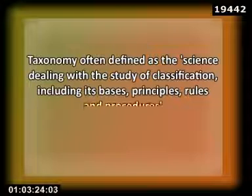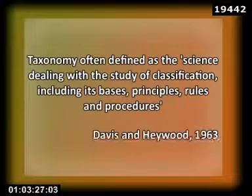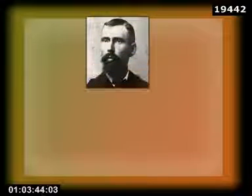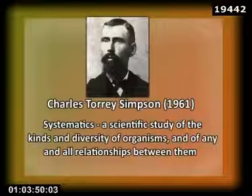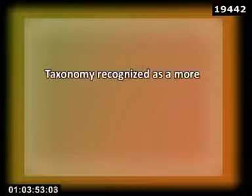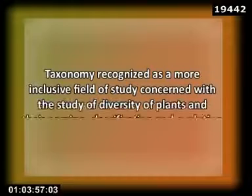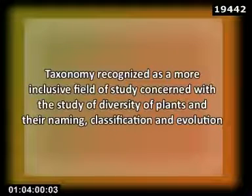Since identification and nomenclature are important prerequisites for any classification, taxonomy is often defined as the science dealing with the study of classification, including its basis, principles, rules, and procedures. The scope of taxonomy has however been enlarged in recent years to make taxonomy and systematics synonymous. Simpson in 1961 defined systematics as a scientific study of the kinds and diversity of organisms and of any and all relationships between them. It was recognized as a more inclusive field of study, concerned with the study of diversity of plants and their classification and evolution.